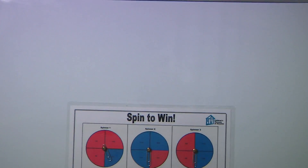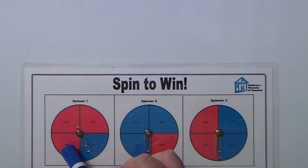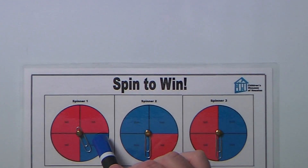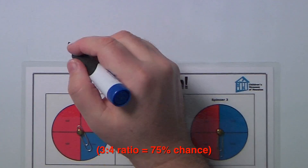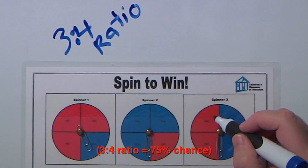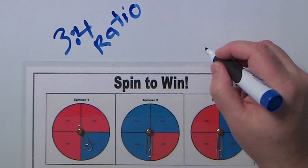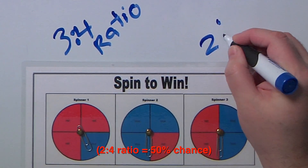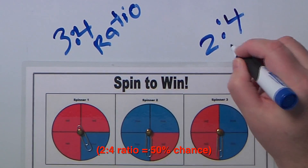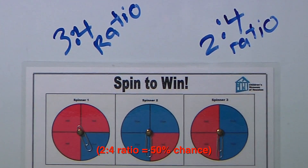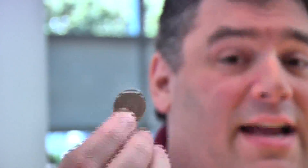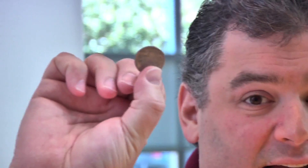Now let's look at this spinner. There are four segments, but there are three opportunities for red to come up, so the probability of red is a three-to-four ratio. But for this spinner, while there are still four segments, there are only two opportunities for red, so the probability of red is a two-to-four ratio. However, probability is just a prediction — it does not guarantee an event will happen. Just because a coin lands on heads the first time does not guarantee it will land on tails the next.